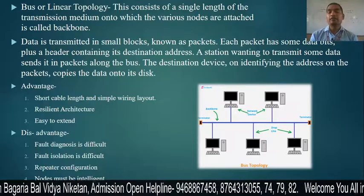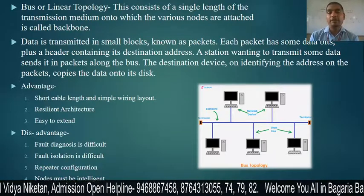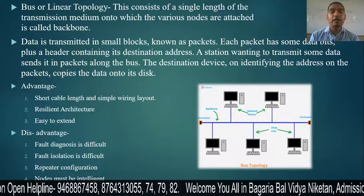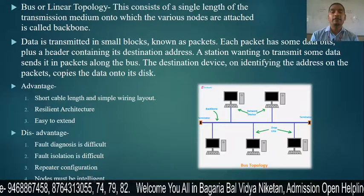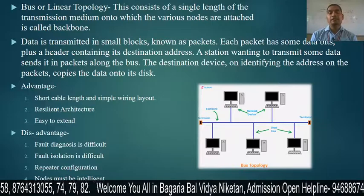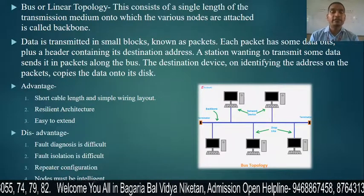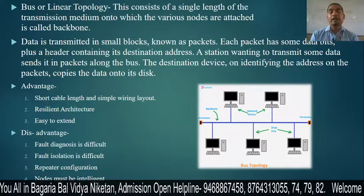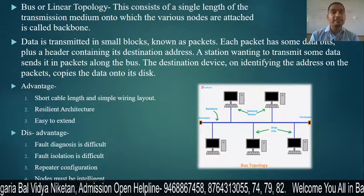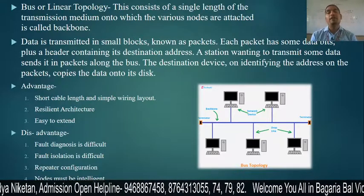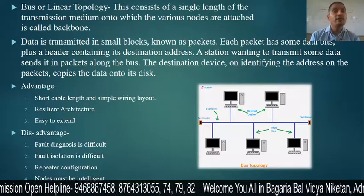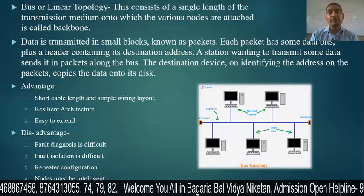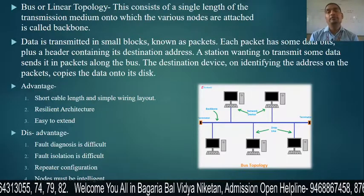The disadvantages of bus topology are: fault diagnosis is difficult — if one computer is broken, there will not be a clear error in the network, making the fault difficult to find. Fault isolation is also difficult — it is not easy to detect and isolate the fault separately. Next is repeater configuration — if you extend the cable length or extend the network, a repeater will be required. A repeater is a device used to regenerate the signal, because after a long distance, your data signal becomes weak.